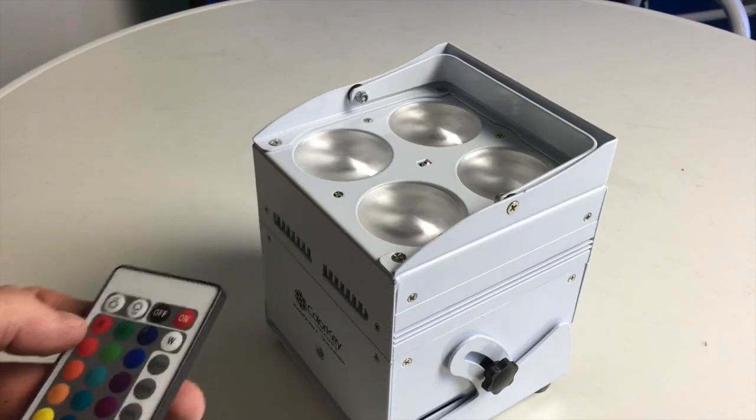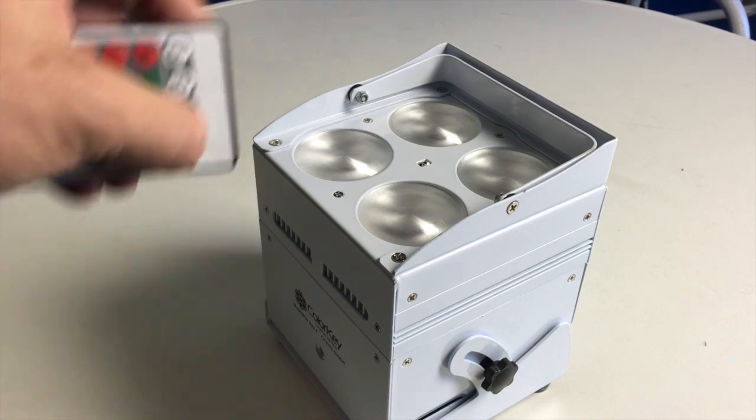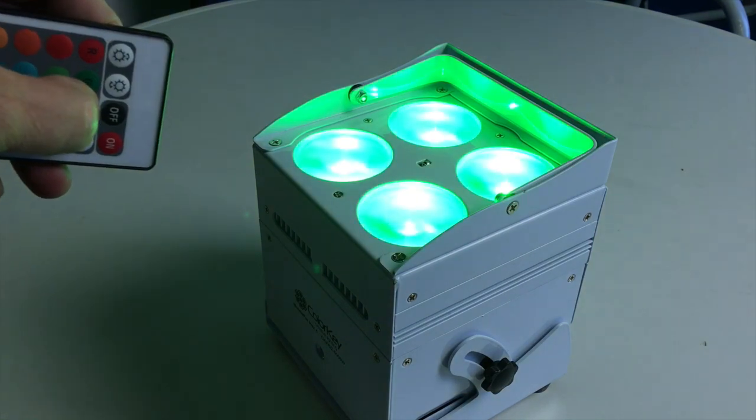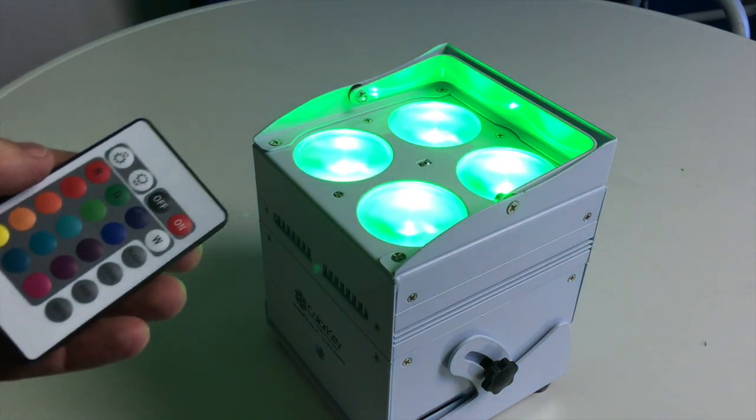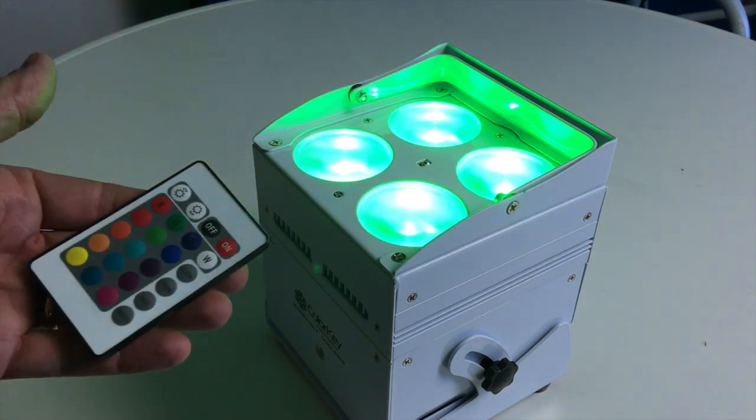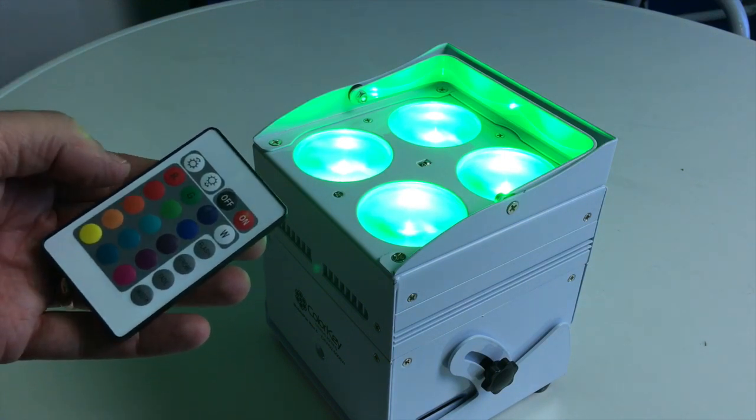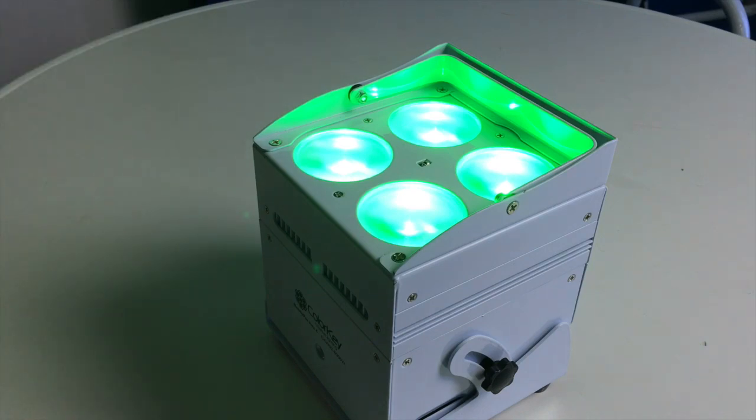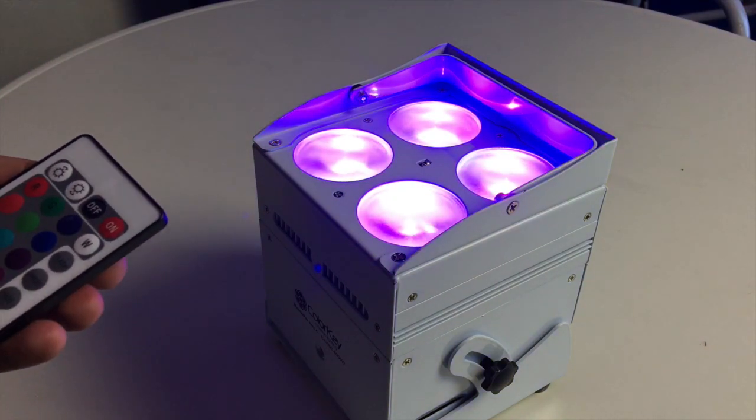So with the little IR remote that is included with this, once it is on, we can turn this on, and we have the ability to change the colors with the little IR remote. Now, the configuration, the way I would use this is I would set the first one up as my master, and I would have the rest of them set slave mode. So that way, when I changed this one to blue, all of them are changed to blue, just that quickly.